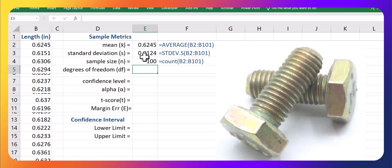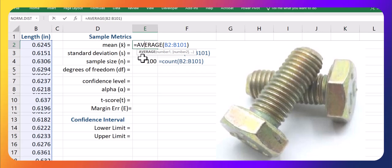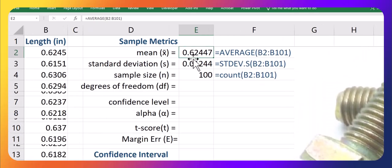Okay, so in this case, I have 100 bolts that have been sampled, or screws, and I find that the average length of them is 0.6245 with a standard deviation of 0.01244. These are in inches.